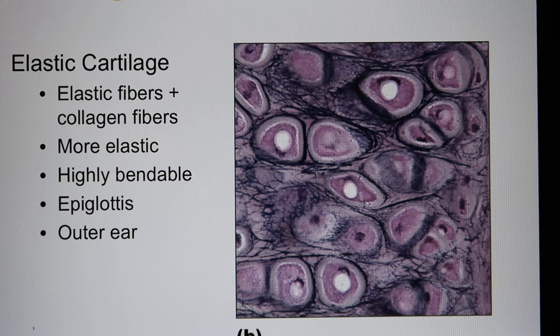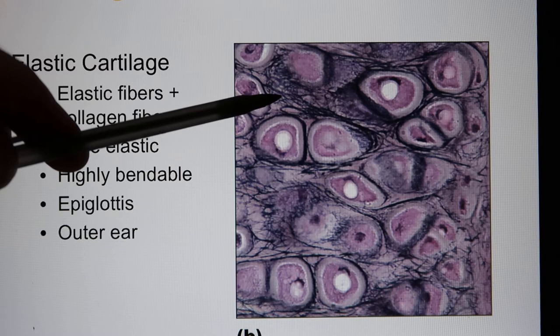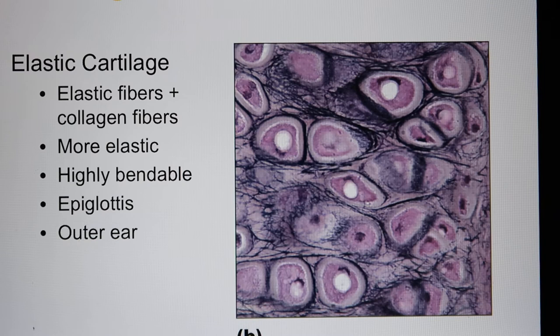The second one is elastic cartilage. This kind of cartilage has a lot of elastic fibers. Usually their color is darker — almost a blue-black color under staining. As the name tells you, this kind of cartilage is bendable and elastic. You find it in the ear and also in the epiglottis.